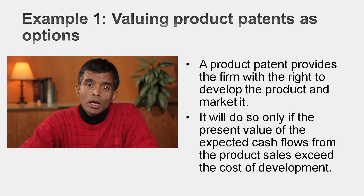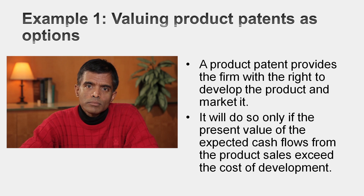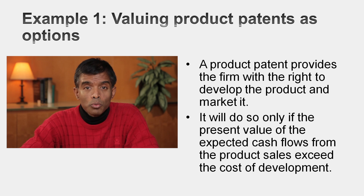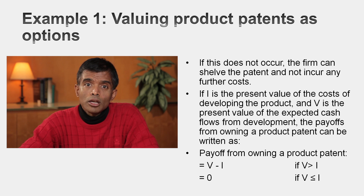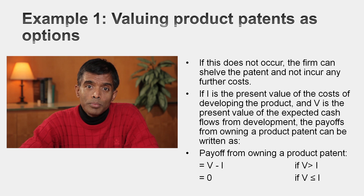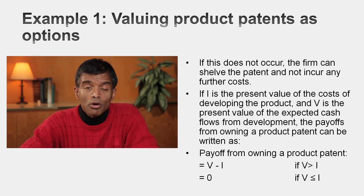I'm going to use two real-world examples. The first is valuing a patent. A patent gives you the exclusive right to commercialize something — a technology, a process — but it's not an obligation. If you have a patent, you do not have to develop it into a product. What drives that choice? Two numbers: the cost of converting the patent into a commercial product, call it I, and the value of cash flows you'd get by converting it, call it V. If V is greater than I, you develop the patent. If not, you sit on it and wait — as long as you have the exclusive rights.